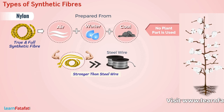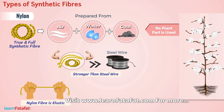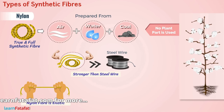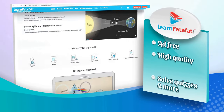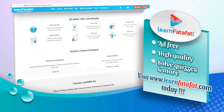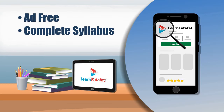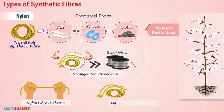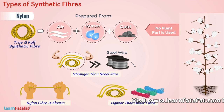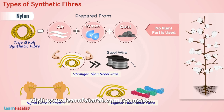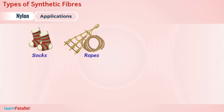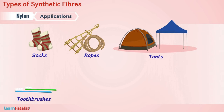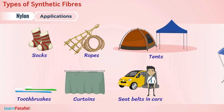Besides strength, a nylon fiber is also elastic, meaning it is capable of regaining its shape after stretching or compressing. Also, nylon fiber is lighter compared to similar fibers. It has a wide range of applications. Many articles are made from nylon: socks, ropes, tents, toothbrushes, curtains, seat belts in cars, parachutes, and more.